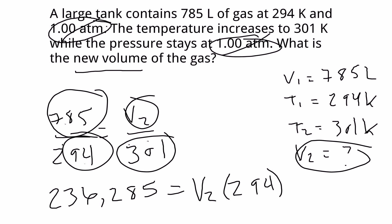And if I divide through by 294 for my large number there, I'll find out what V2 is equal to. So I'll give you a second to put that in the calculator.